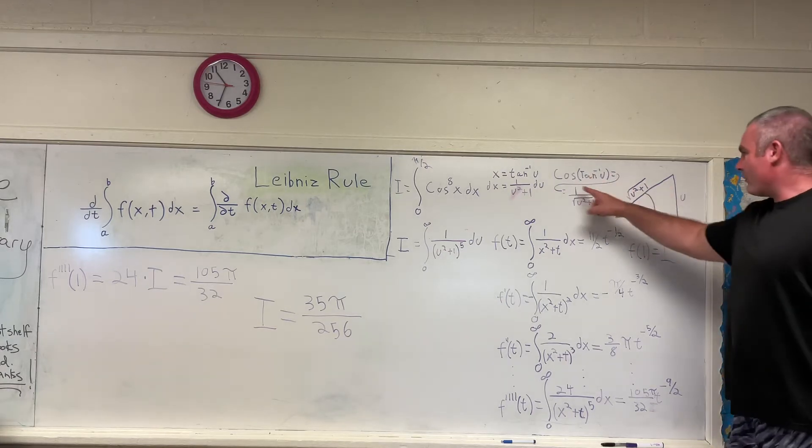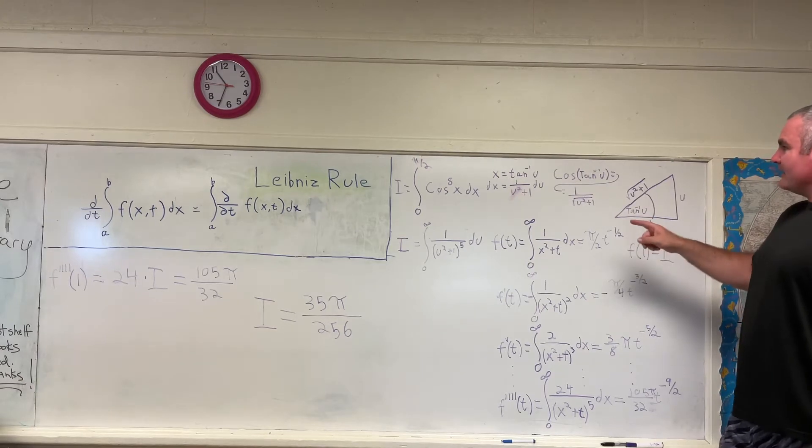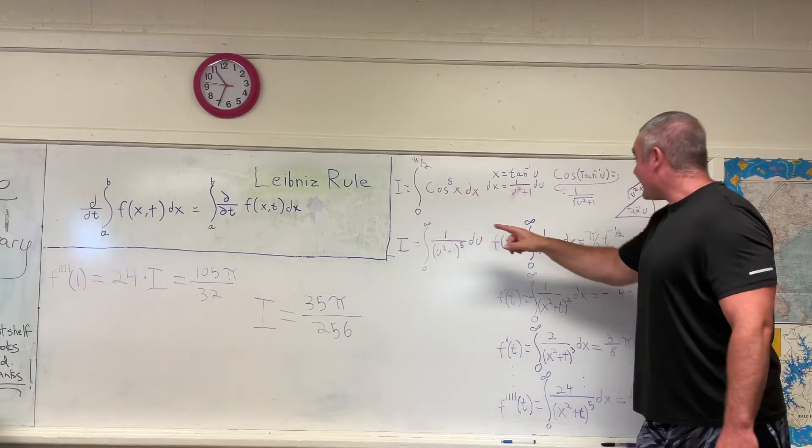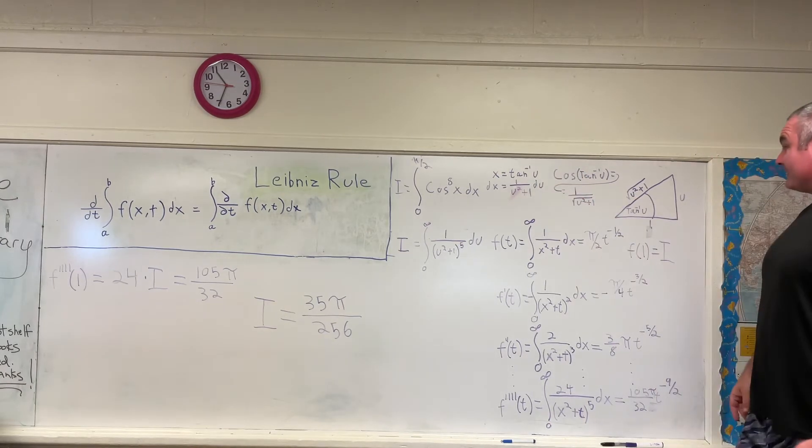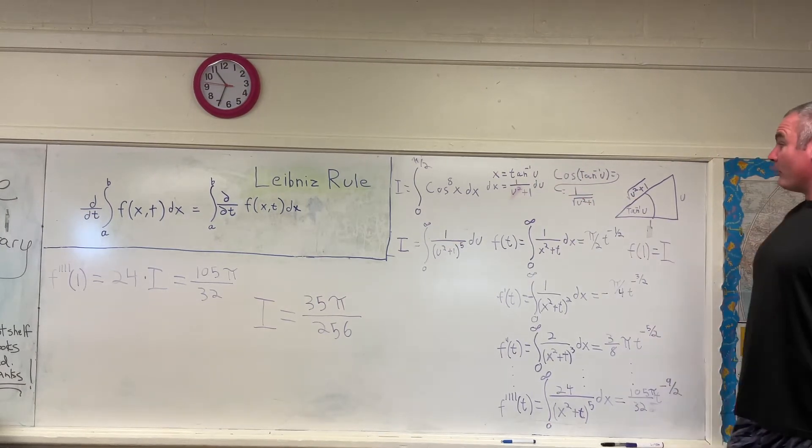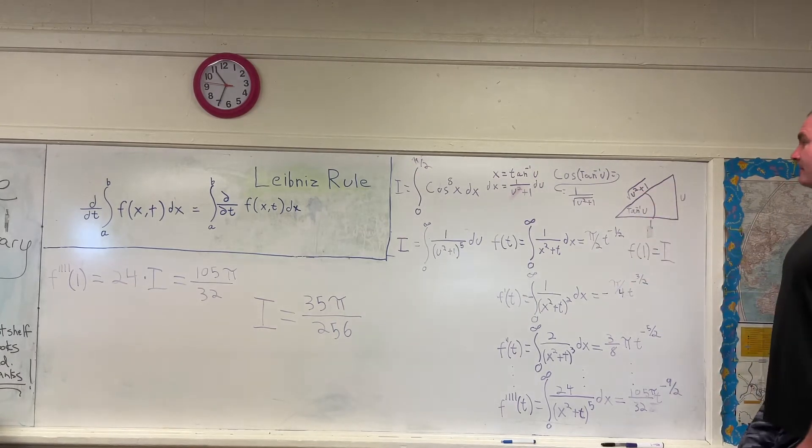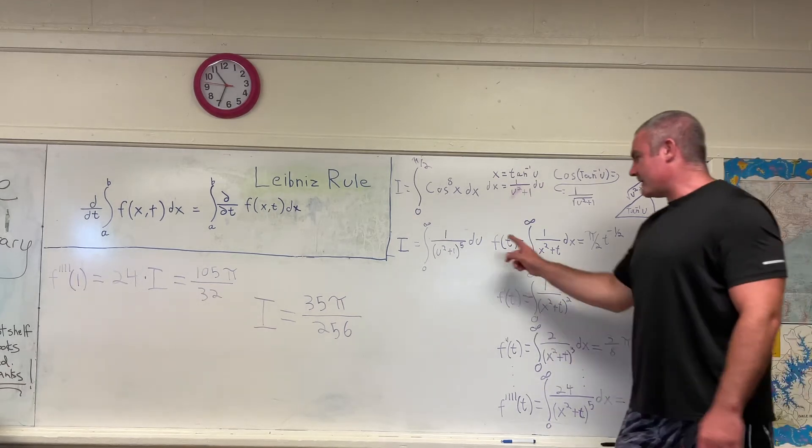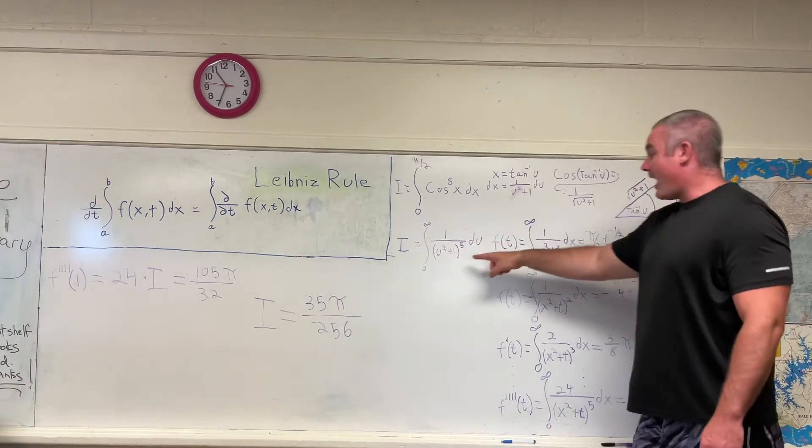So anyway, we had, now we know this. So since we know this, we know what the cosine to the eighth of tangent inverse of u is, and that is 1 over u squared plus 1 to the fourth. And I didn't show the rest of the steps. Now that I've explained that, it should be pretty obvious how you get to there. So now we have two different expressions for i.